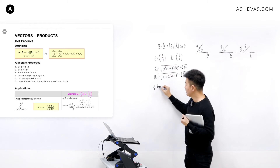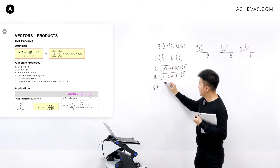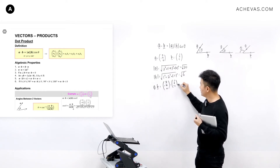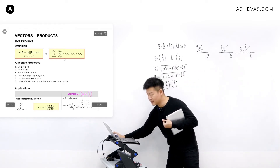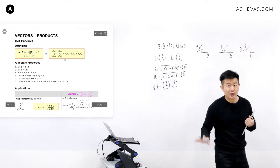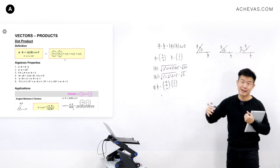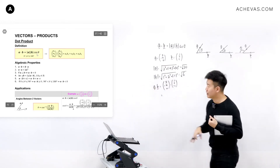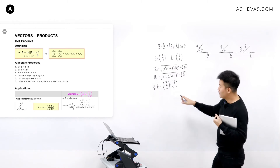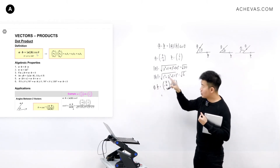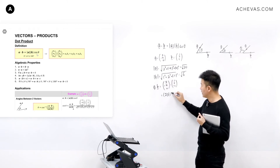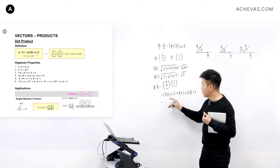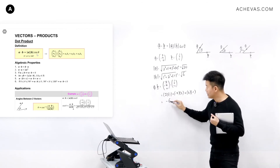For A dot B, if A is (2, −4, 0) and B is (1, 2, −1), we apply the formula: A dot B equals 2 multiplied by 1, plus (−4) multiplied by 2, plus 0 multiplied by (−1). So we have 2 minus 8 plus 0, which equals minus 6.